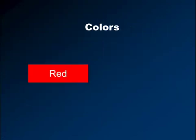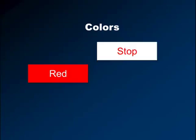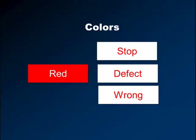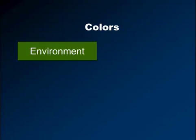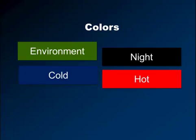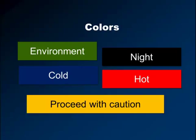Different colors have different meanings in different cultures. In North America: red means stop, defect, or wrong — I would never use red to say 'welcome to ABC company.' Green is an environmental color, black is night, blue is cold, red is hot, and yellow means proceed with caution. Use colors the way you think they should be used — use their natural meaning.